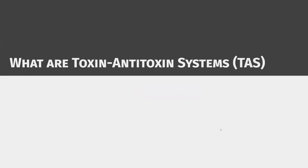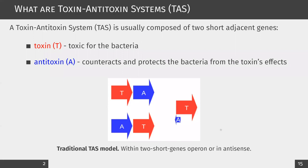Let's start with a general introduction about TAS. A toxin-antitoxin system is made of two short adjacent genes: a toxin, which as its name suggests is toxic for the bacteria when expressed, and an antitoxin, which acts as an antidote against the toxin. These two genes are located within the same operon, usually with the antitoxin upstream of the toxin, and sometimes the other way around.